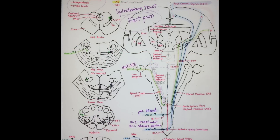Here we're looking at the spinothalamic tract, which includes your pain, temperature, and crude touch — and specifically the type of pain we're talking about here is fast pain.